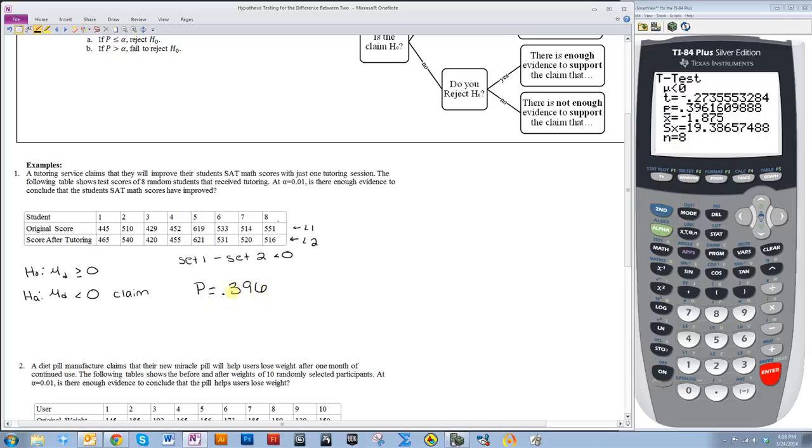We get P is equal to .396. So now we want to compare P to alpha. Our alpha in this case is 0.01, so P is greater than alpha, so that means we fail to reject H0. Whenever P is greater than alpha, you fail to reject H0. Whenever P is less than alpha, you reject H0. The way I always remember it is if it's greater than, it's the one with more words. If it's less than, it's the one with less words.